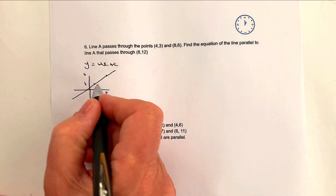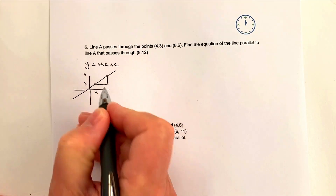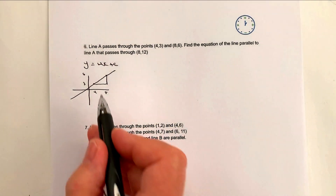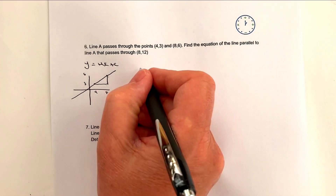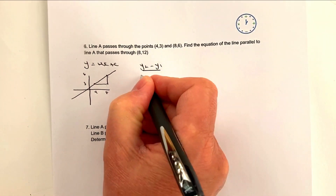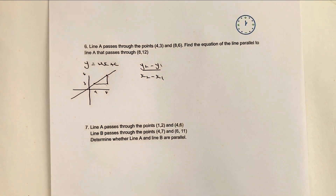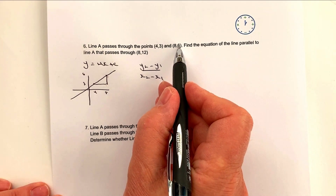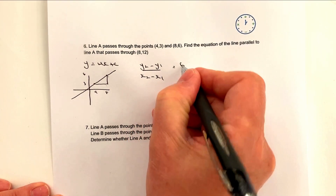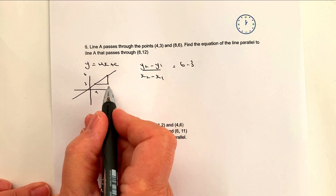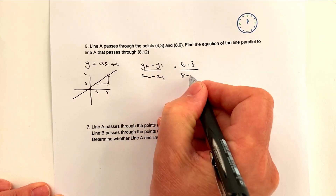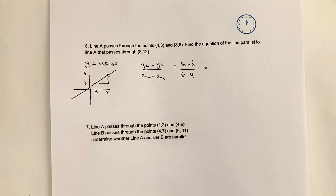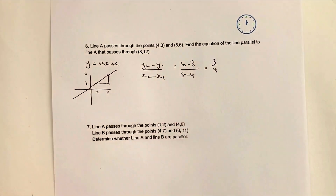We can sketch a right-angle triangle: difference in y is 3, difference in x is 4. Using y₂ − y₁ over x₂ − x₁: y₂ = 6, y₁ = 3, x₂ = 8, x₁ = 4. So we get (6 − 3) ÷ (8 − 4), which gives a gradient of three-quarters.